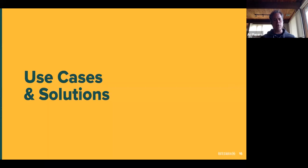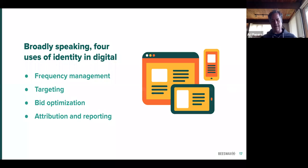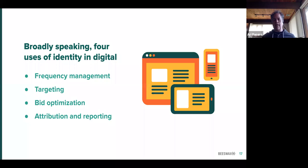So let's go to it. What we're going to do is go through some practical examples and talk about what works and what doesn't work. If we want to broadly talk about identity, there are four uses of identity in digital: frequency management, targeting — first- and third-party targeting — optimization, meaning how much should I pay for this user, how should I score this user, and attribution and reporting. These four really cover most of the things that a DSP or an ad server use identity for. We're going to go through each of these four and deep dive on the techniques involved.